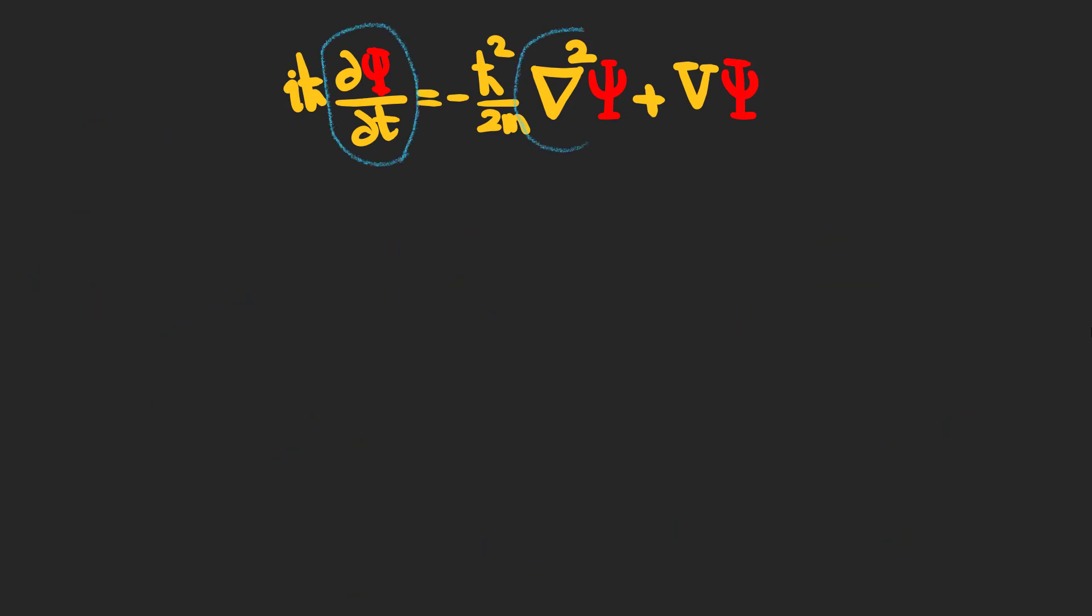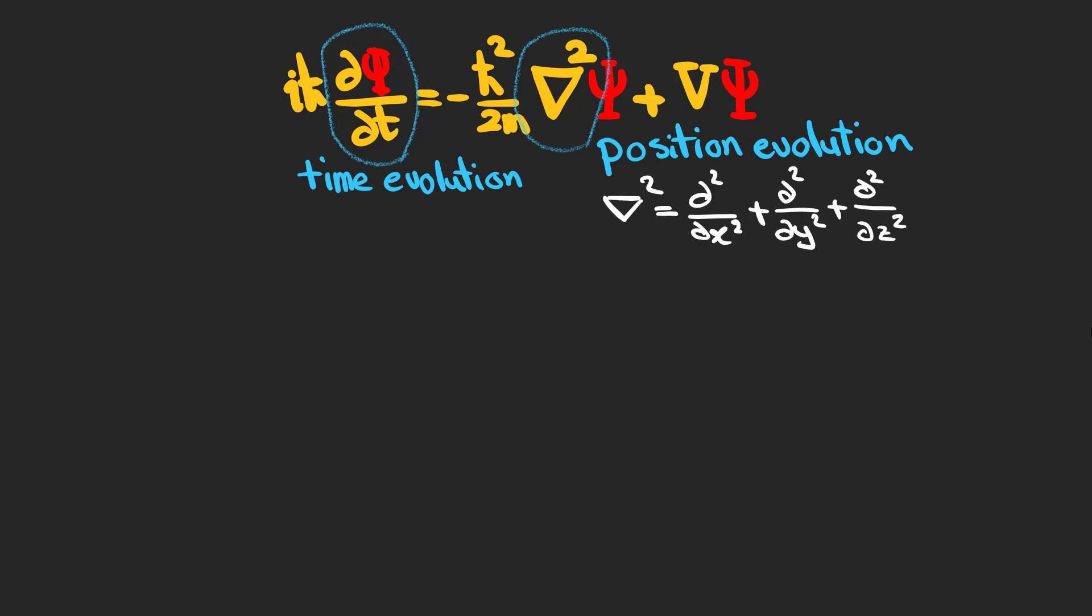In the Schrödinger equation, we have two kinds of evolutions: time evolution and position evolution of the wave function, in which the position evolution can be written as the sum of second order partial derivatives in different dimensions.